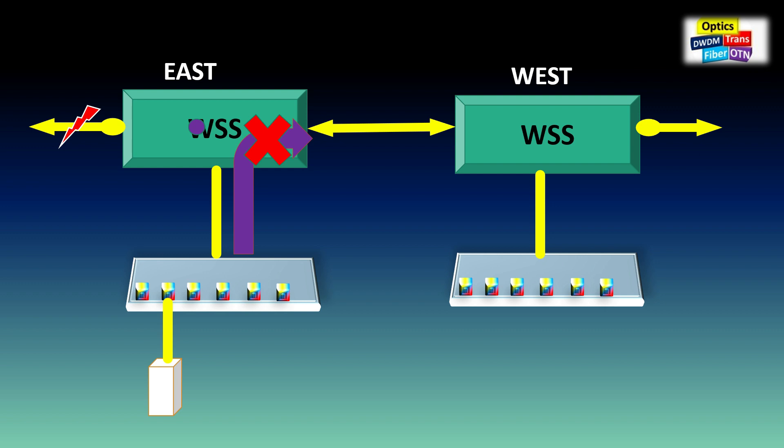Now to restore the service, someone visits the site to move the transponder to the MUX-DEMUX associated to another direction, which is time-consuming and costly activity. This configuration is direction-dependent, called directional. To achieve network automation, we need directionless functionality.